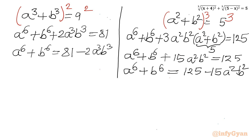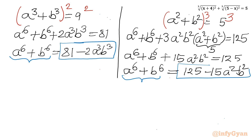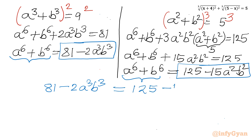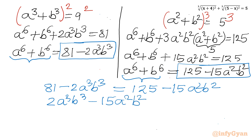Now if you notice, both equations have a power 6 plus b power 6 on the left-hand side. So we will equate our right-hand sides: 81 minus 2 a cube b cube equals 125 minus 15 a squared b squared. Taking all terms to one side, we get 2 a cube b cube minus 15 a squared b squared plus 44 equals 0.